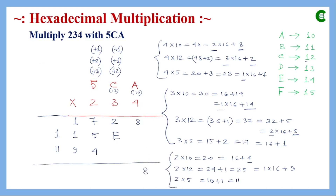We write 8 directly. Then E plus 2: E is 14, so 14 plus 2 is 16, giving sum 0 and carry 1. Then 7 plus 5 is 12, plus 4 is 16, plus carry 1 is 17. 17 is 1 multiplied by 16 plus 1, so sum is 1 with carry 1. Then 9 plus 1 is 10, plus 1 is 11, plus 1 is 12, which is C. And 11 plus 1 is 12, also C. The final product of 5CA multiplied by 234 is CC108.